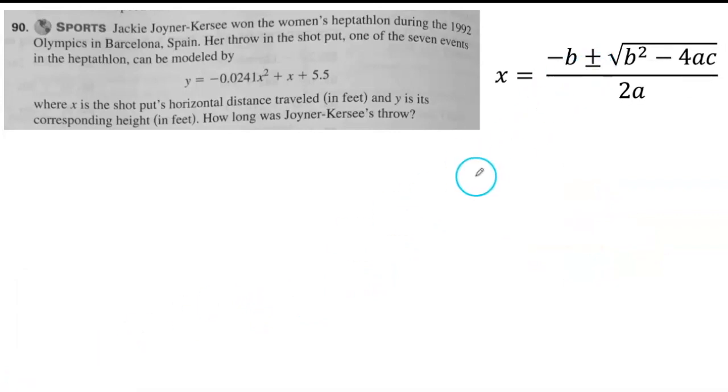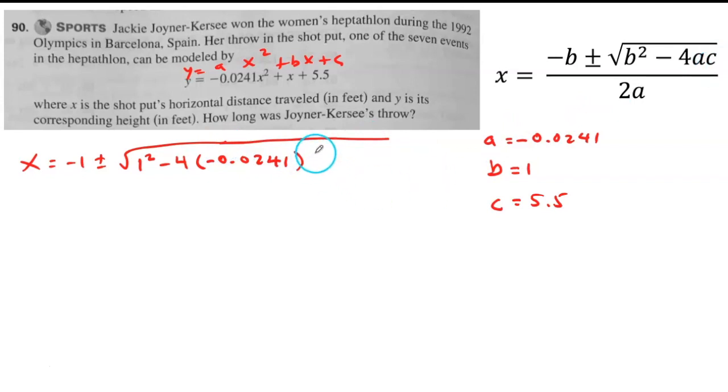So, let's use the quadratic formula. Here we have our function: y equals ax squared plus bx plus c. Therefore, the a value is negative 0.0241, my b value is 1, c is 5.5. Let's use the quadratic: x equals negative b, negative 1, plus or minus b squared, 1 squared minus 4 times a, which is negative 0.0241 times c. And my c value is 5.5. Everything over 2 times a.